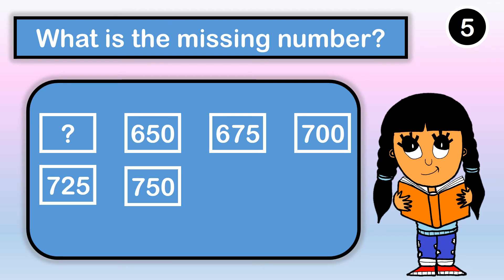Can you tell me the missing number? We have our missing number first, then six hundred fifty, six hundred seventy-five, seven hundred, seven hundred twenty-five, seven hundred fifty. We are skip counting by twenty-five, so our missing number is six hundred twenty-five.